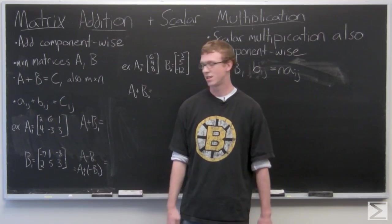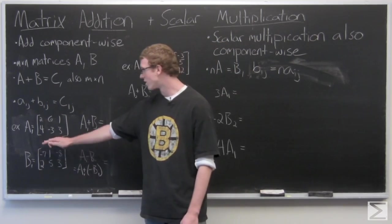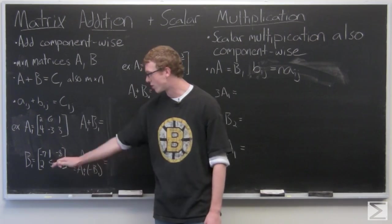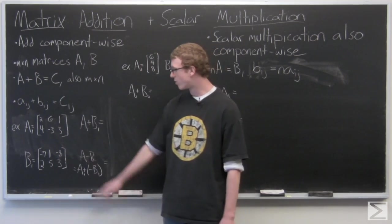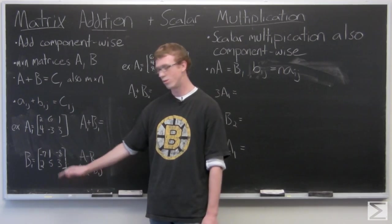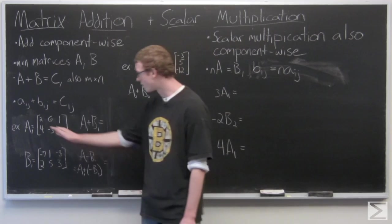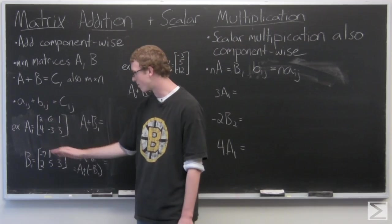So we're going to take a look at just some basic examples here. We have matrix A1: 2, 6, 1, 4, negative 3, 3. Matrix B: negative 7, 1, negative 8, 2, 5, 3. A1 plus B1, we're just going to add component-wise. So you have 2 plus negative 7, 6 plus 1, etc.